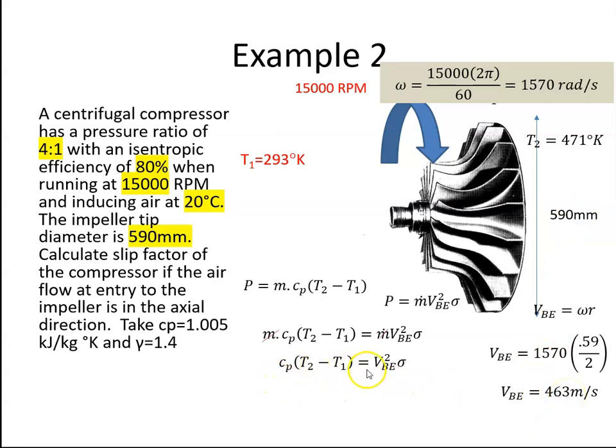So now we have all our values. Cp is 1,005 joules per kilogram degrees Kelvin, T2 is 471, T1 is 293, and that should equal 463 squared times sigma, which is the slip. The slip works out to be 0.83.